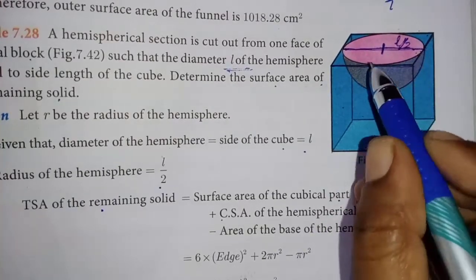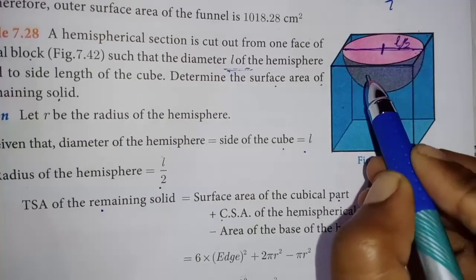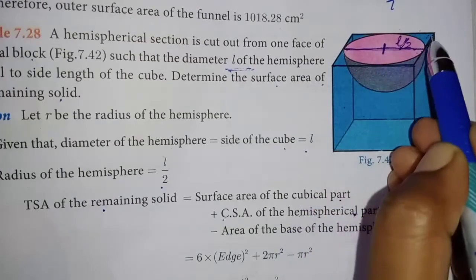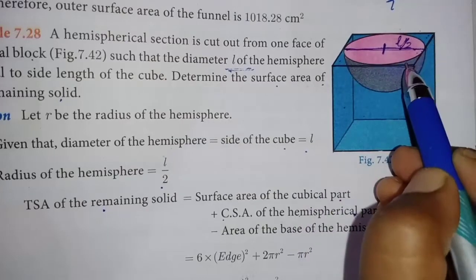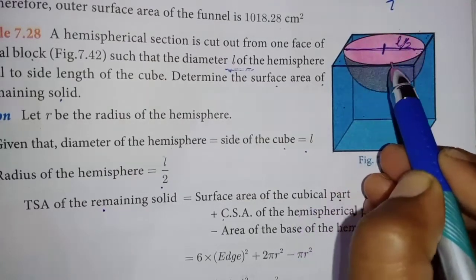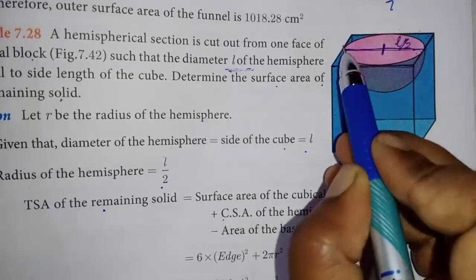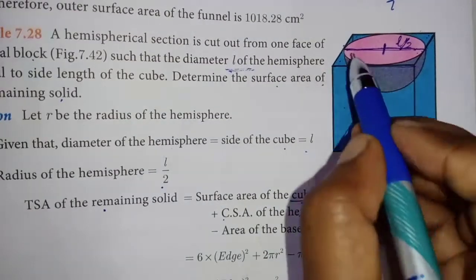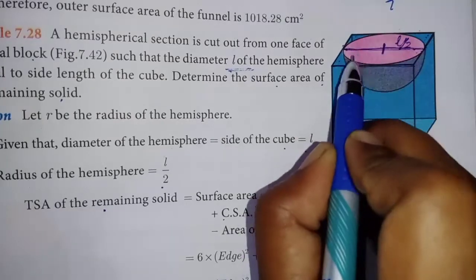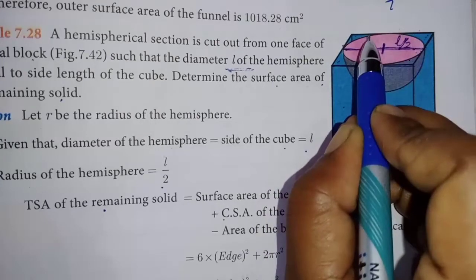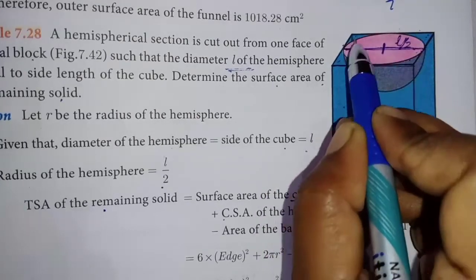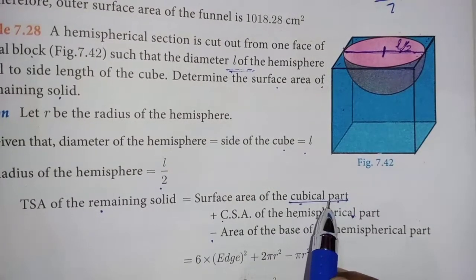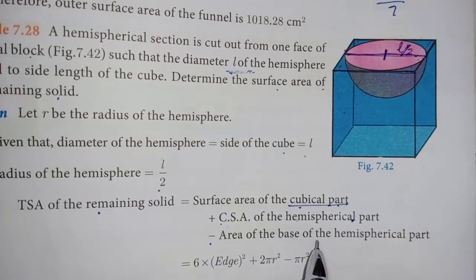The radius is L by 2. Now the total surface area of the remaining solid equals the surface area of the cubical block, plus the curved surface area (CSA) of the hemispherical section, minus the area of the base of the hemispherical section.